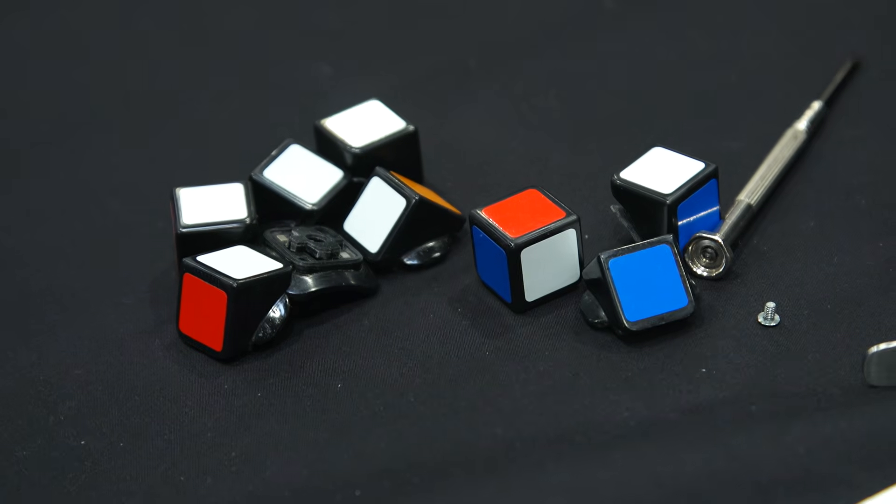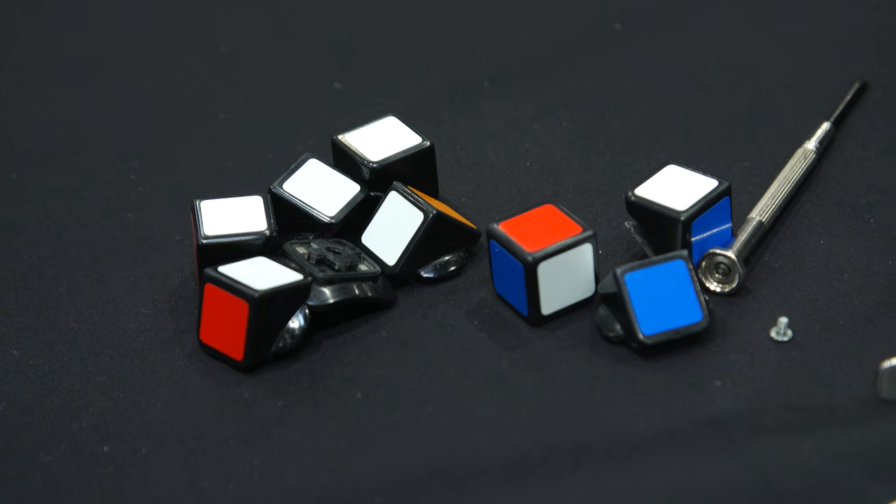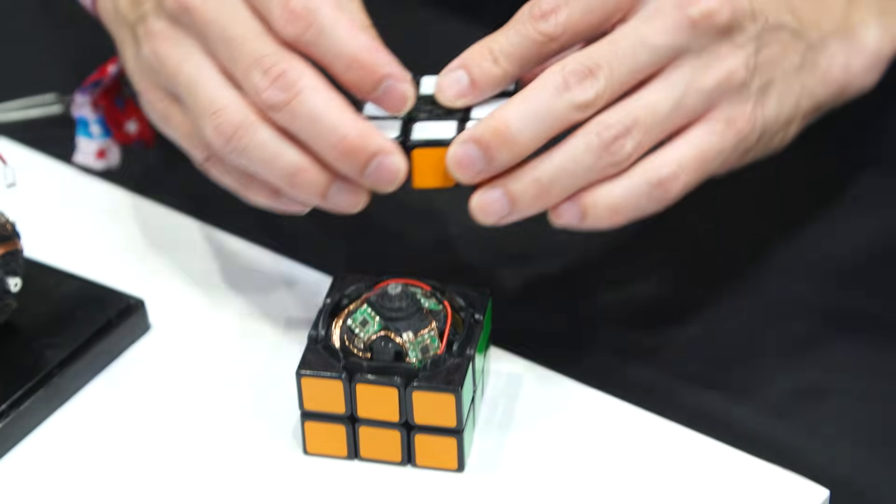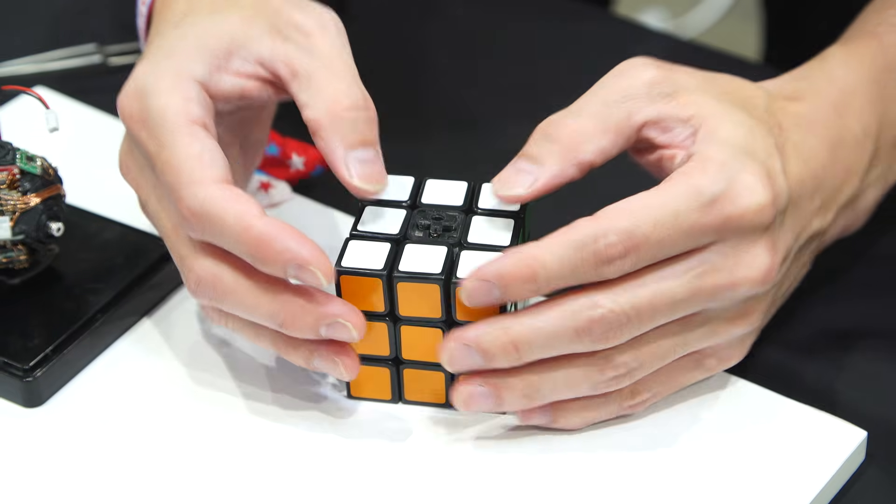And then what you get eventually is this robot, which, as you can see, looks exactly like a traditional Rubik's Cube.